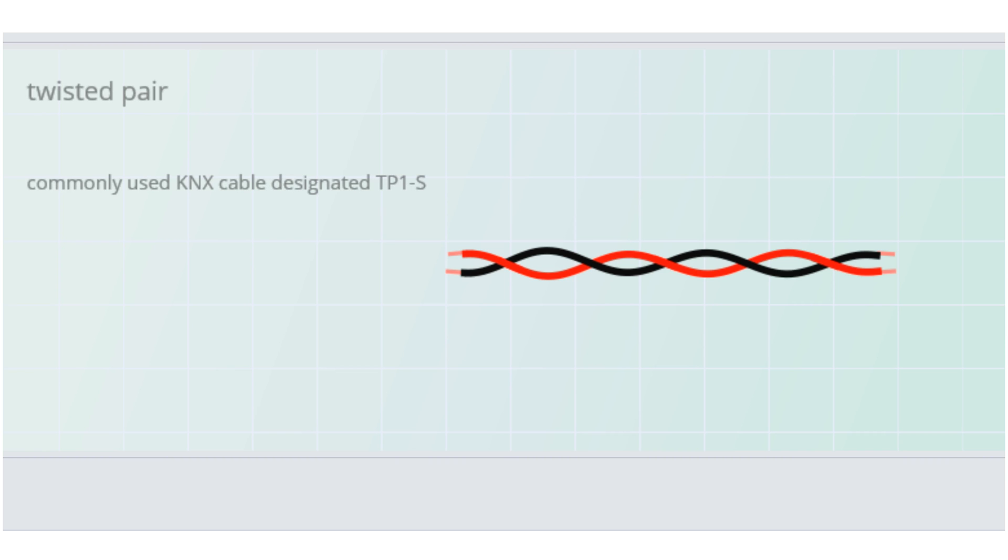The most commonly used KNX cable is designated TP1S. The term twisted pair derives from the fact that the cable contains cores which are twisted together to reduce interference.